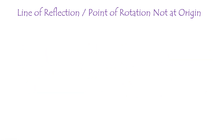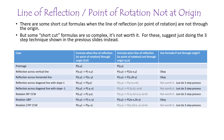There are some shortcut formulas when the line of reflection or point of rotation are not through the origin, but some of those formulas are complex and not worth memorizing. For those complex ones, just use the three-step technique, which works in all cases. For reflection across a vertical or horizontal line and rotation of 180 degrees, there are nice short formulas you can memorize. For other situations, the three-step process is the recommended approach.